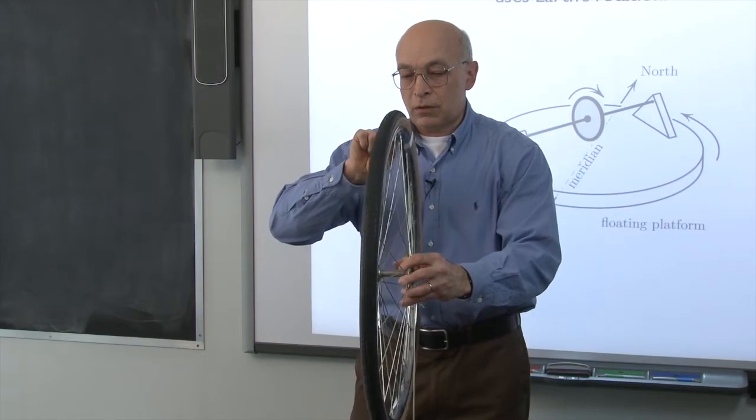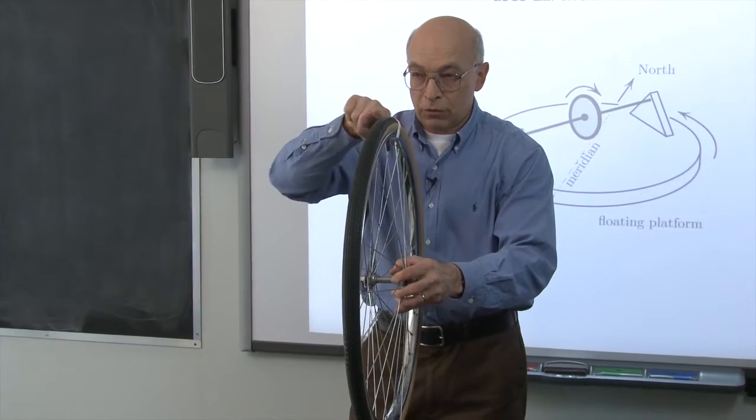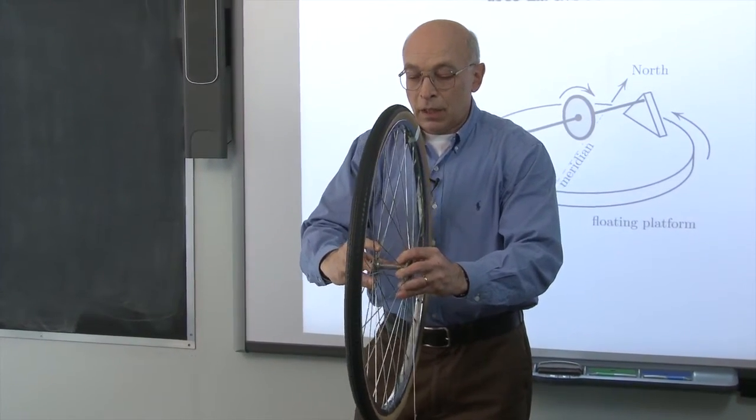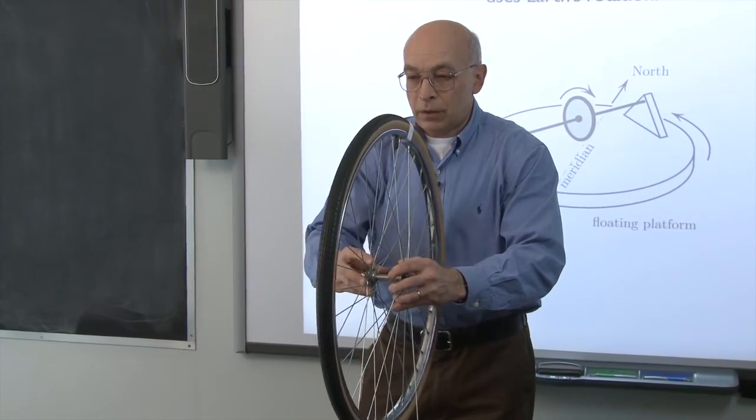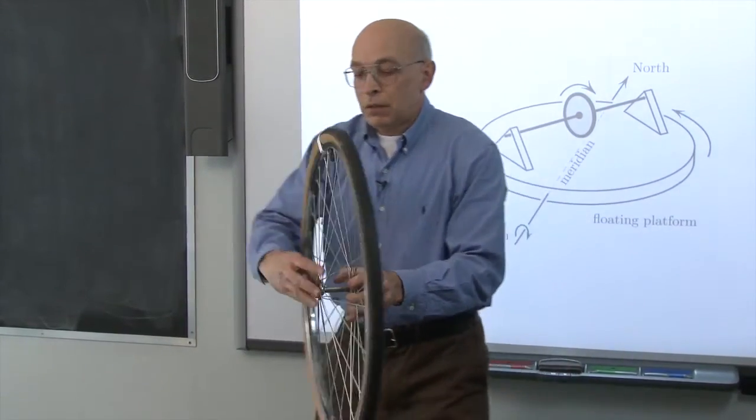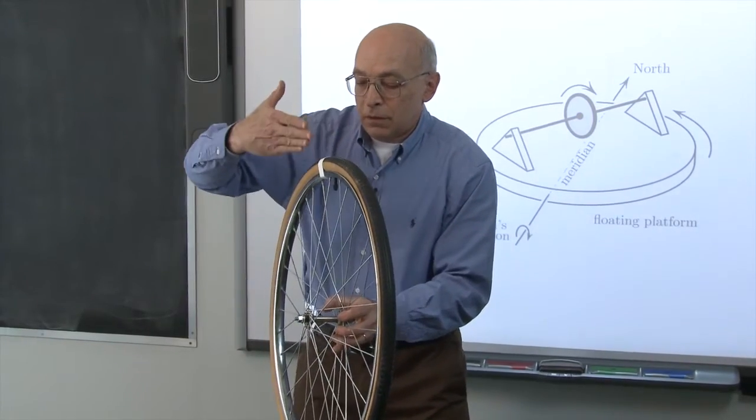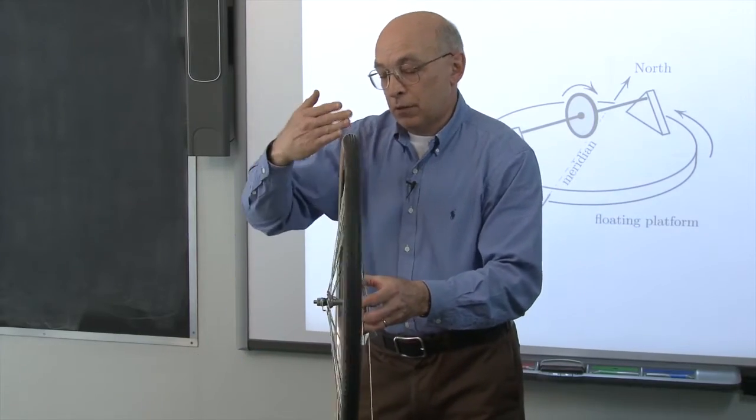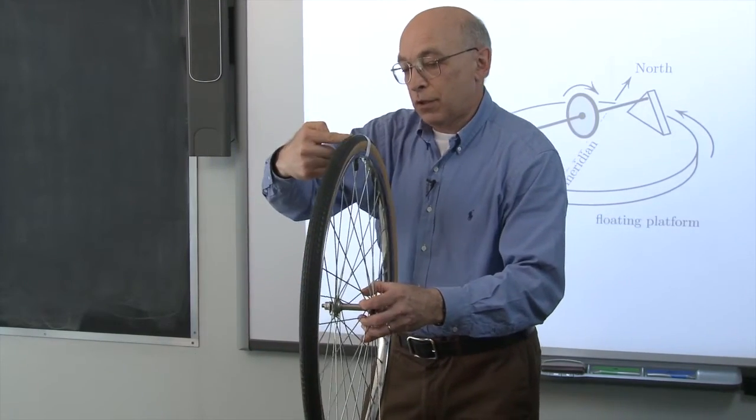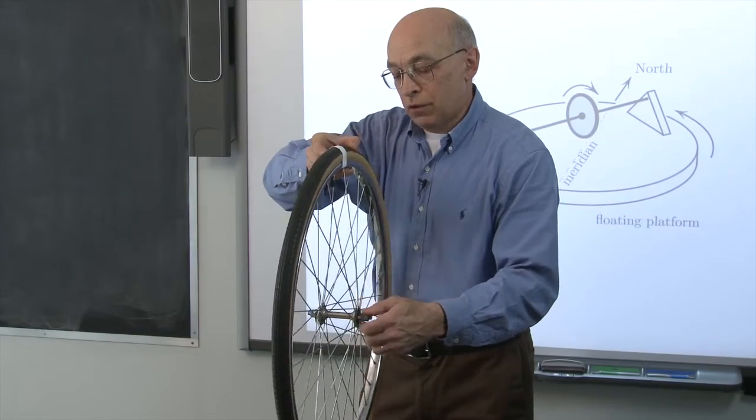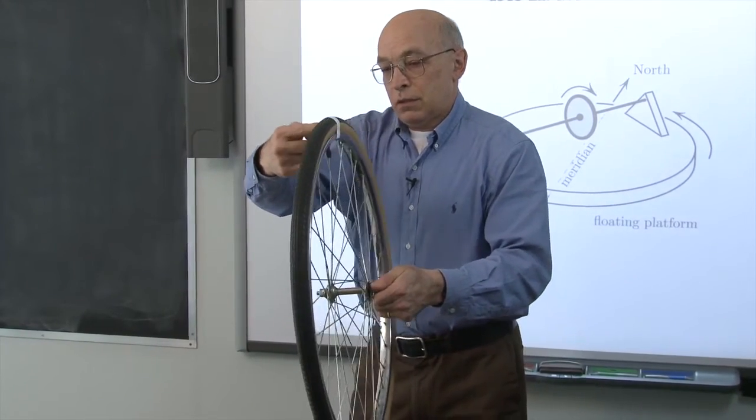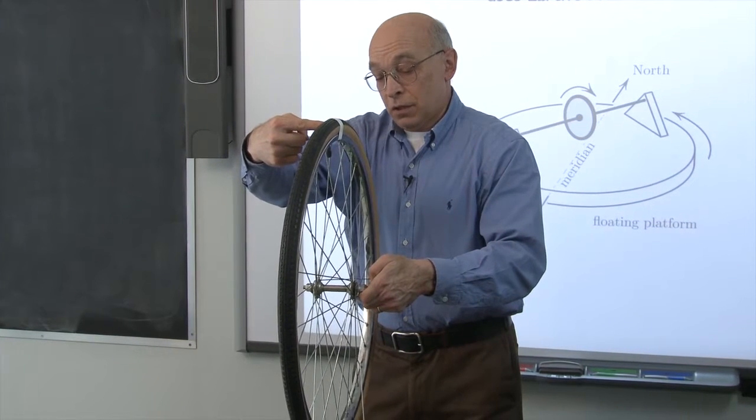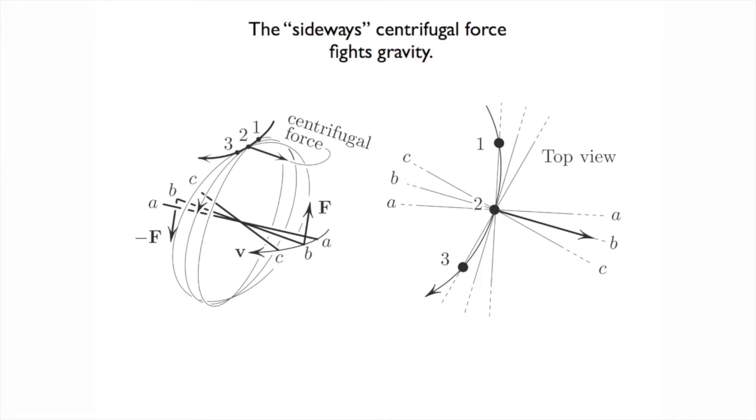My wheel spins so that the white mark goes towards you. And at the same time, the wheel precesses like this. So that means that the mass of this white thing executes a curved path. In addition, of course, to spinning around the center, it curves like this. And therefore, it exerts a certain centrifugal force that is in the direction of my index finger. And it's this force that keeps the gyroscope up. That's the short answer. Why doesn't the gyroscope fall?